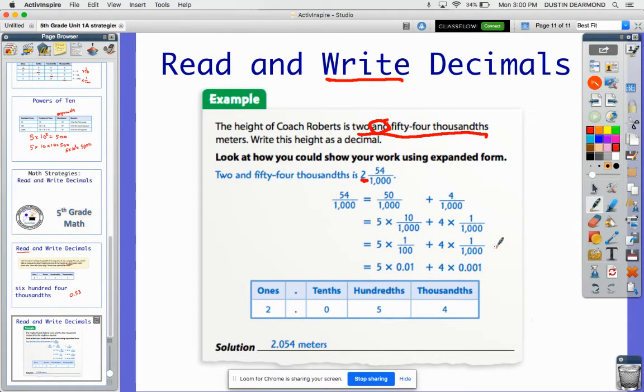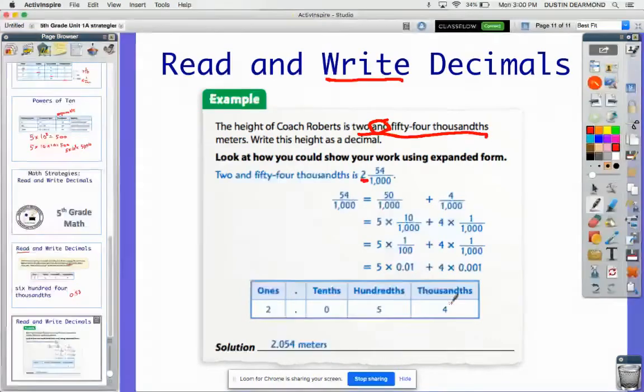To me, that can still be kind of confusing. For some people, they can see that, and they see how this is broken apart using expanded form, looking at each place value, switching it from thousandths down to hundredths, or leaving this one as thousandths, so you end up with a five in the hundredths place and four in the thousandths place right here. But here it is. I think the place value chart is the easiest way to do this.